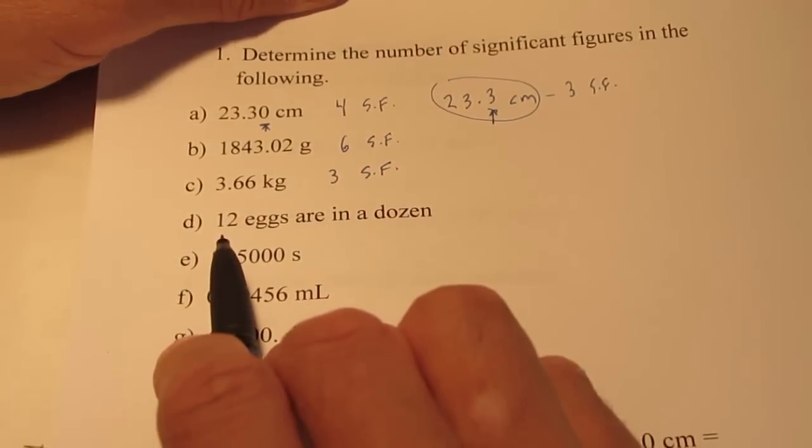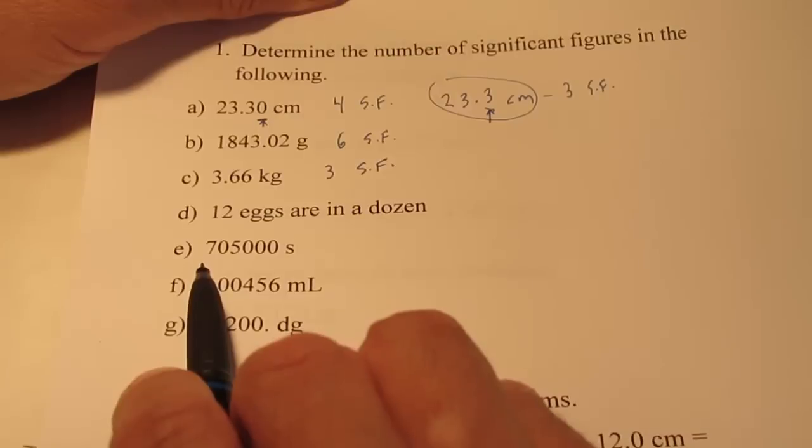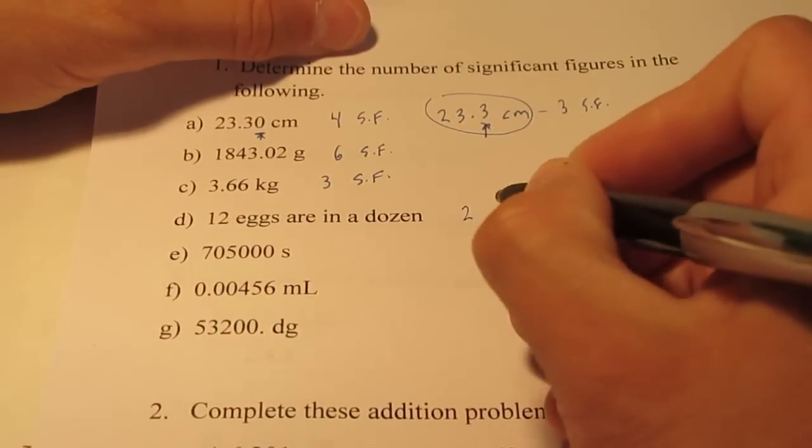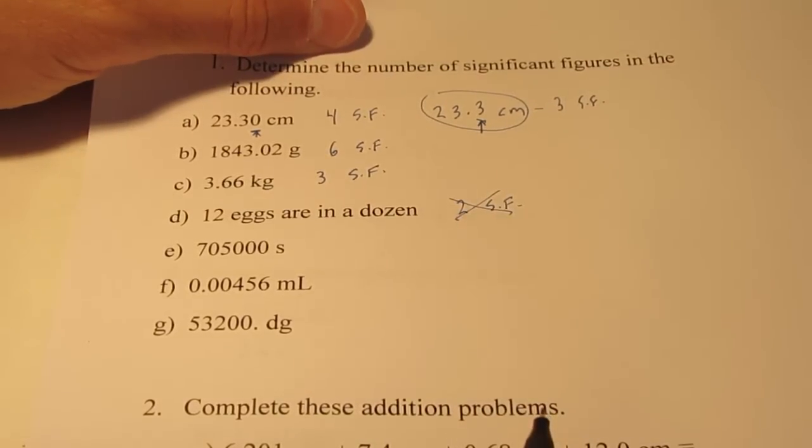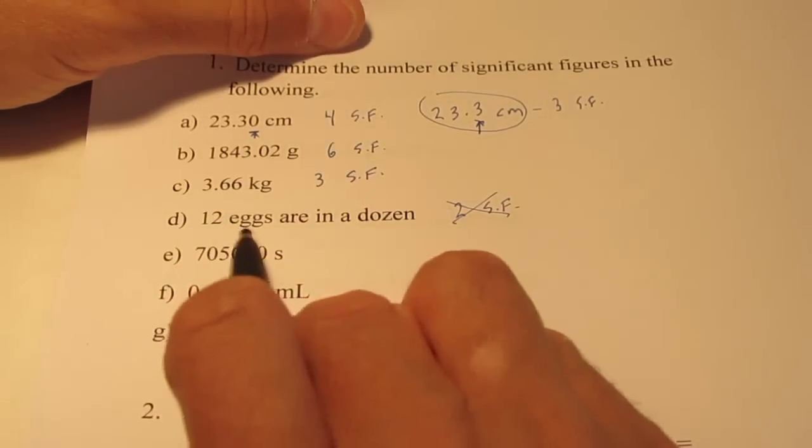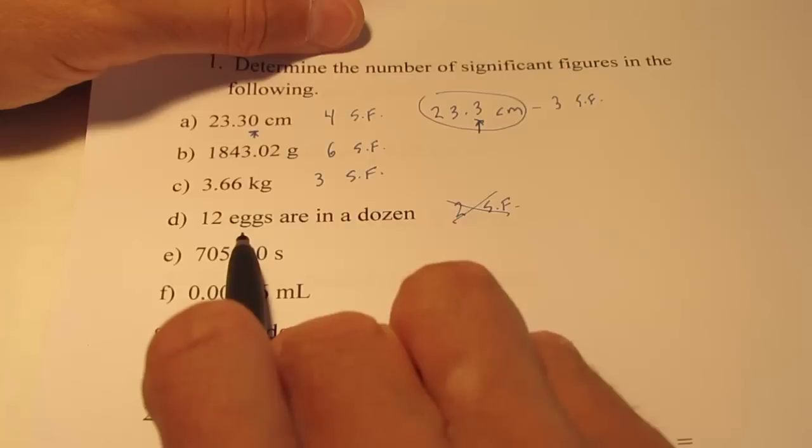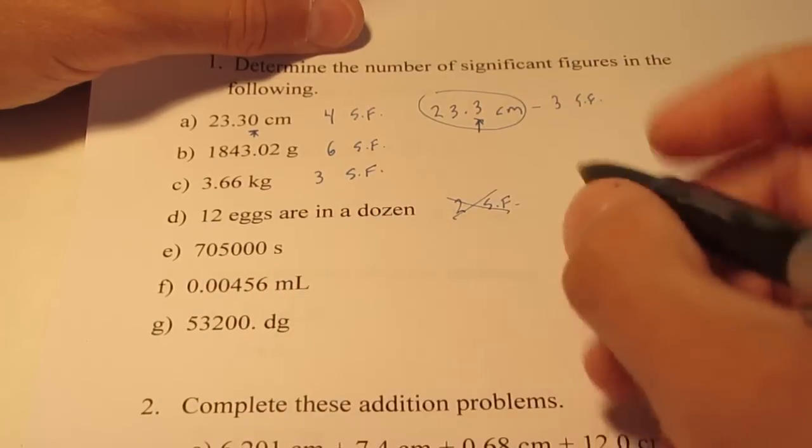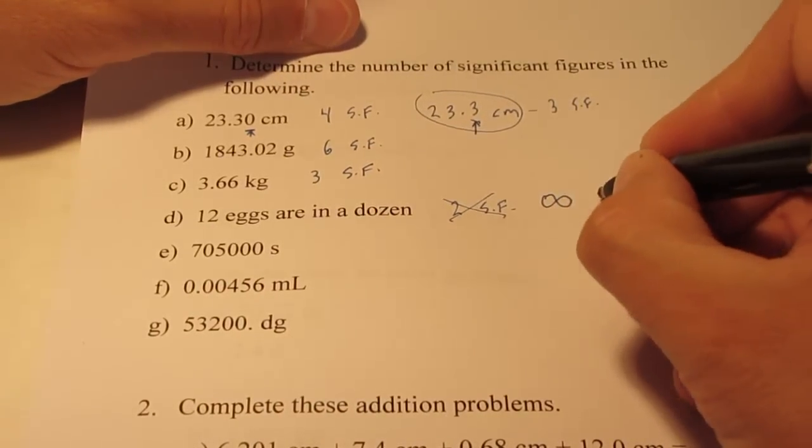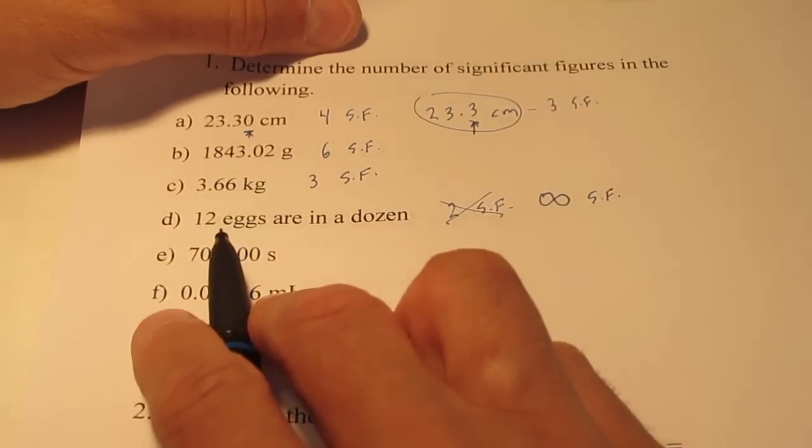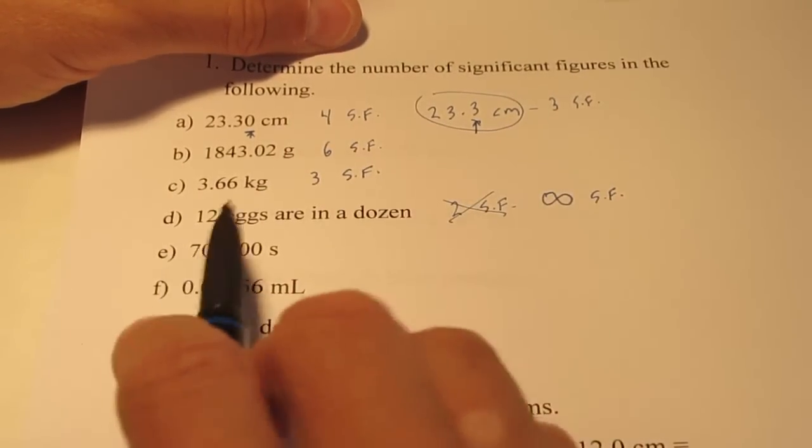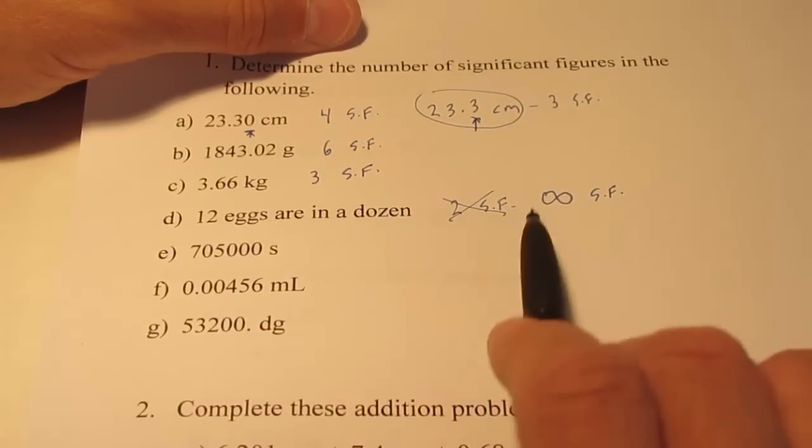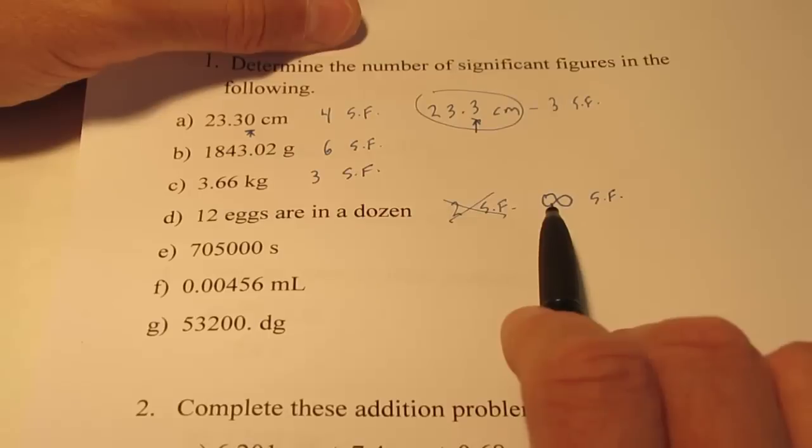How about letter D? There are 12 eggs in a dozen. I'll bet many of you right now are writing down two significant figures, aren't you? You're wrong. Think. Why is that wrong? 12 eggs in a dozen. Is that a measured number? It's a counted number, isn't it? Counted numbers, or in this case, definitions, have an infinite number of significant figures. There are 12 eggs in a dozen, not 12.001 eggs in a dozen. That wouldn't be a dozen, would it? So, counted numbers, or definitions, have infinite number of significant figures.